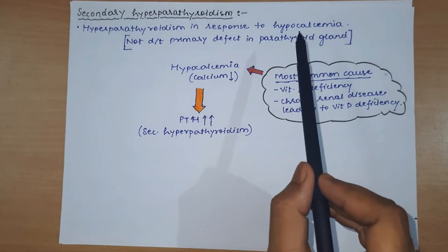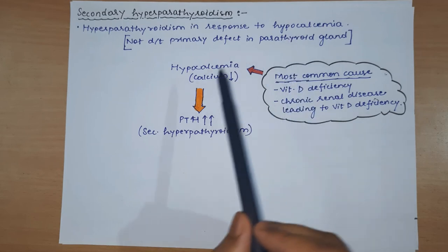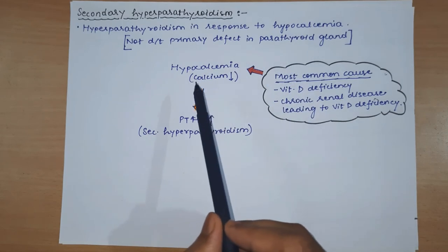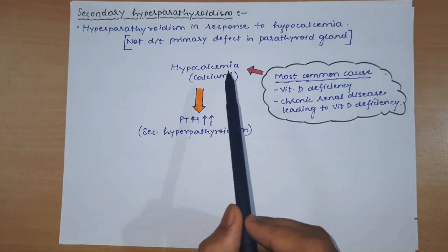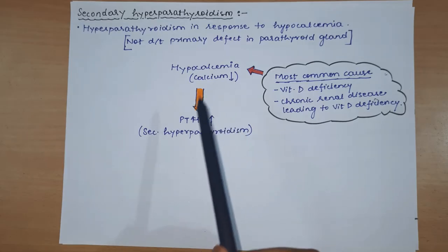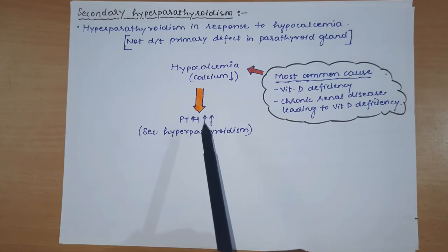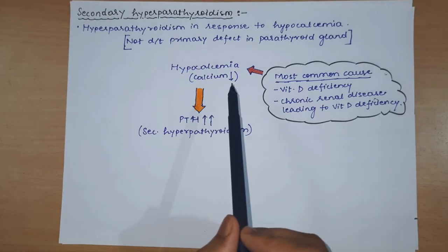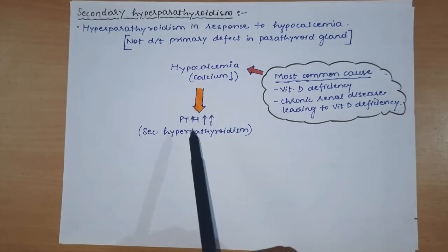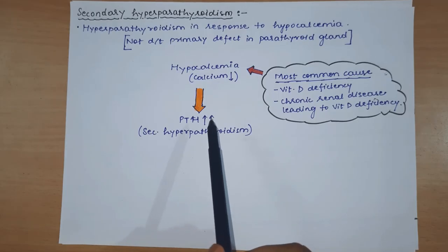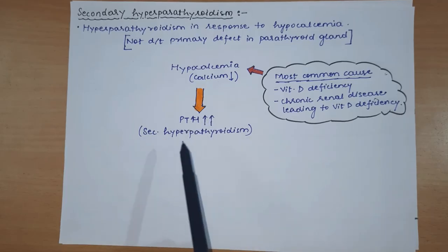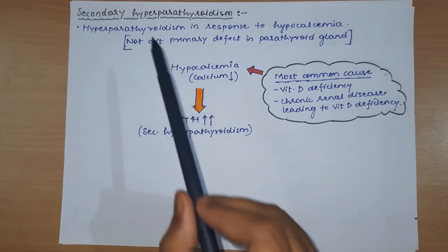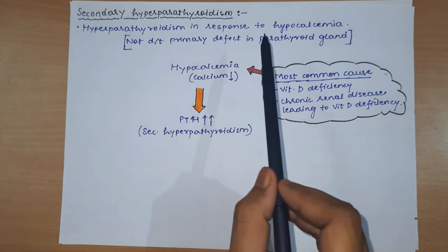Secondary hyperparathyroidism is the response to hypocalcemia. If the blood calcium level is less than normal, which is sensed by calcium sensing receptors, then parathyroid hormone is released from the parathyroid gland. This condition is called secondary hyperparathyroidism - it is actually the hyperparathyroidism that develops in response to hypocalcemia.